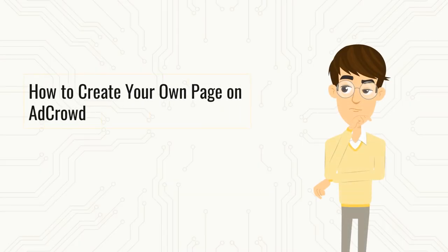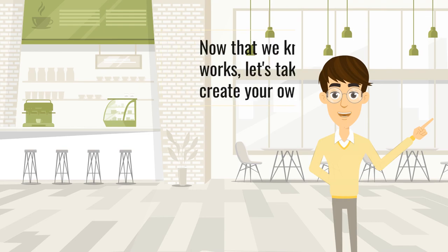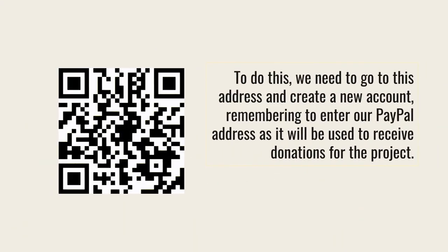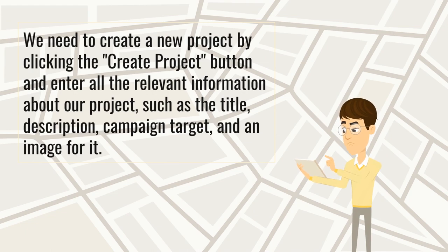How to create your own page on AdCrowd. Now that we know how the application works, let's take a look at how to create your own page. To do this, we need to go to the address shown and create a new account, remembering to enter our PayPal address as it will be used to receive donations for the project. We then create a new project by clicking the 'Create Project' button and enter all the relevant information such as the title, description, campaign target, and an image.